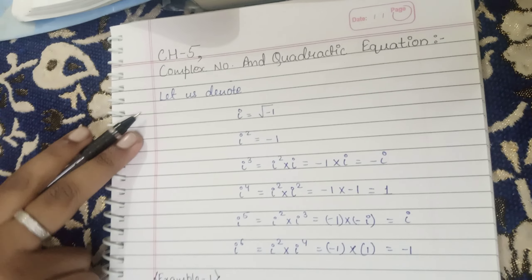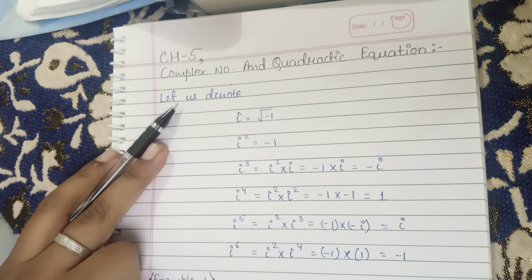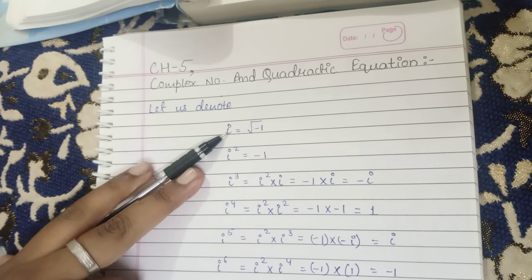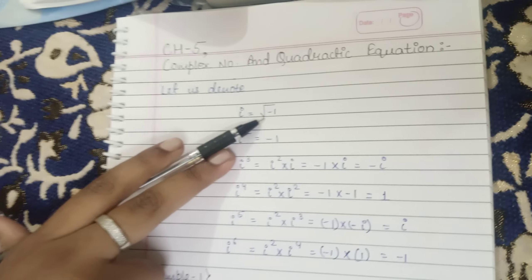Let us take first i. i is denoted by iota, its value is under root minus 1.